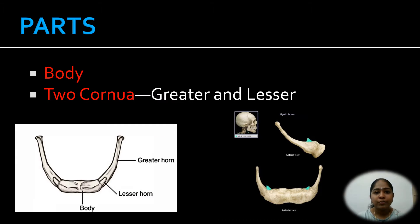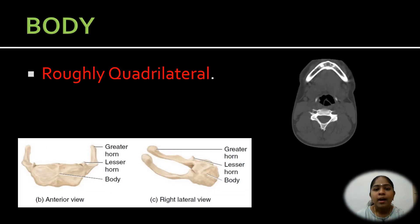Parts of the hyoid bone: the bone consists of a central part called the body, the two cornua — the lesser and the greater cornua on either side. Describing the body, it is roughly quadrilateral. The anterior surface is directed forwards and upwards, while the posterior surface is directed backwards and downwards.